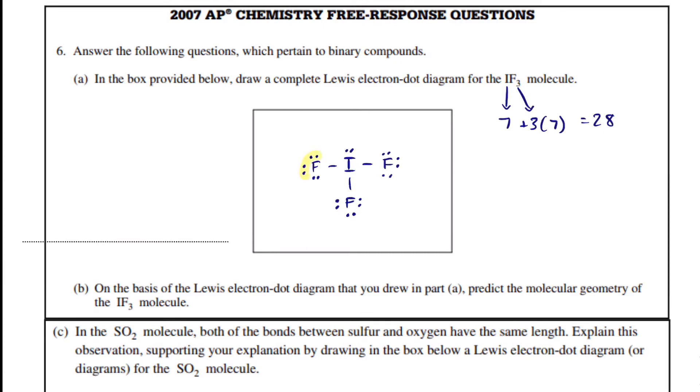So, when I count, I get 2, 4, 6, 8, 10, 12, 14, 16, 18, 20, 22, 24, 26, so I'm short by 2. So what I'll do is, when you're short, just add another pair to your central element, and now we have 28, and that looks good.